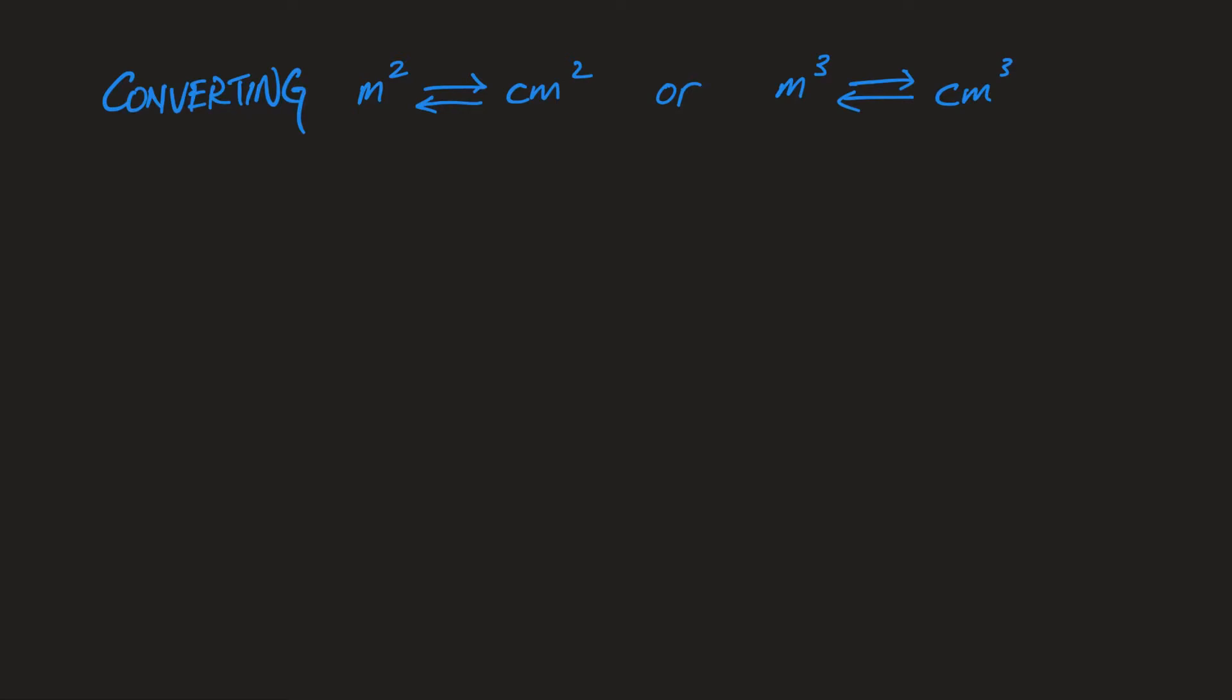In this video we're going to learn how to convert area units between meter squared and cm squared, and also volume units meter cubed and cm cubed. If I give you a rectangle, let's say 50 cm and 30 cm, and I need the area to be meter squared, of course you will just directly change this to 0.5 meter and 0.3 meter, then use your calculator and get meter squared directly.